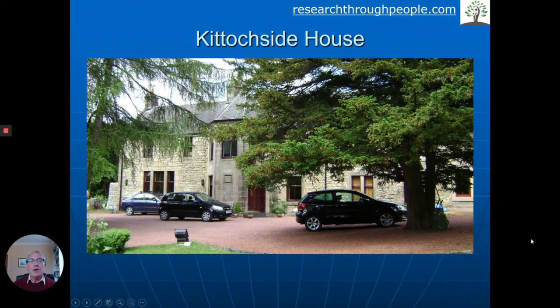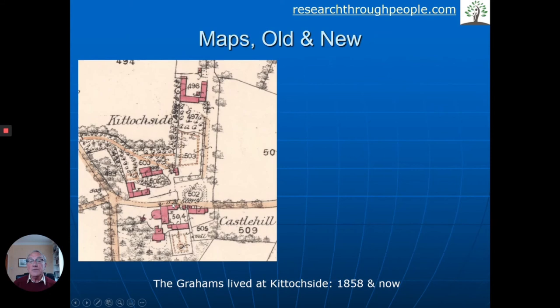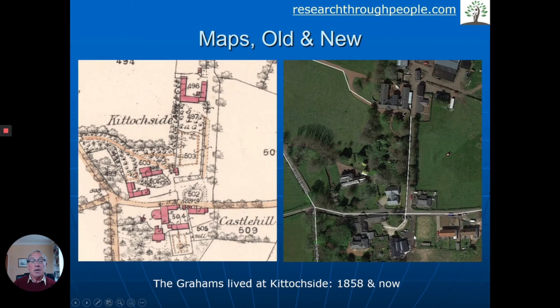Here we have Kittock Side House — a nice old house, probably built in the early 1800s, but with a wall at the rear dated 1610, so properties have been there for 400 years. Maps are very often where we start. We found an old map from 1858 showing Kittock Side with a number of buildings. Looking at it now, those buildings are still there. In rural settings you quite often find that old farm buildings remain, perhaps with additions, but the basic buildings haven't changed much over the years.